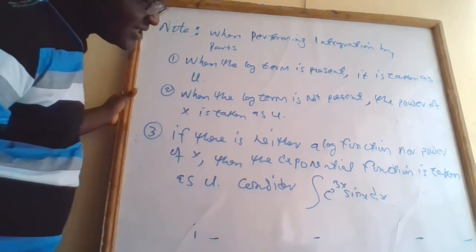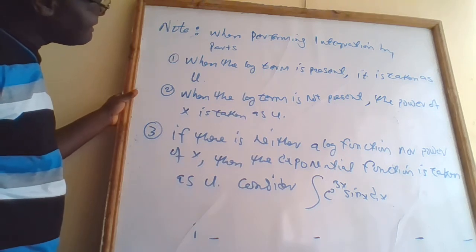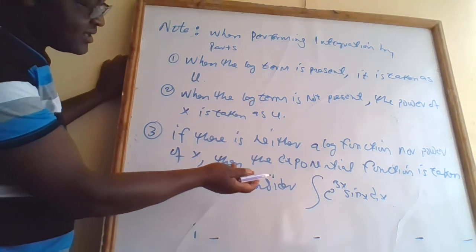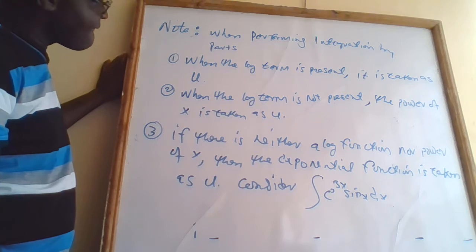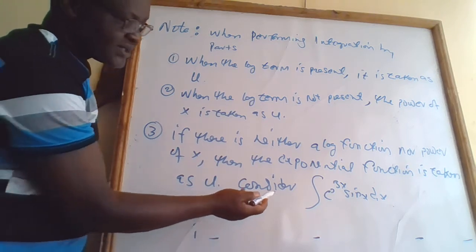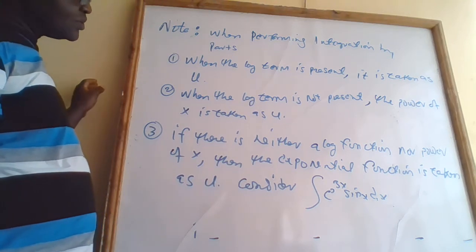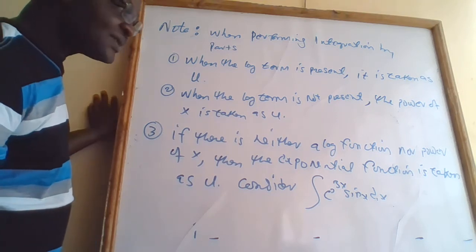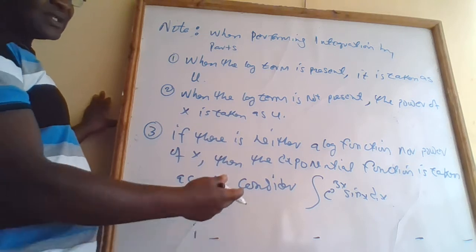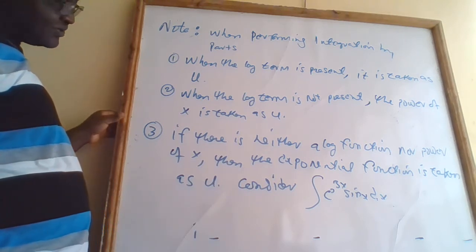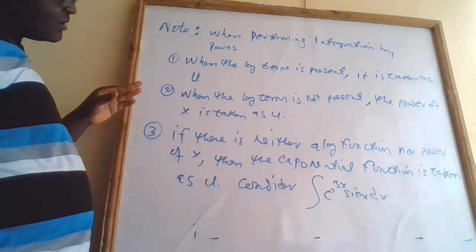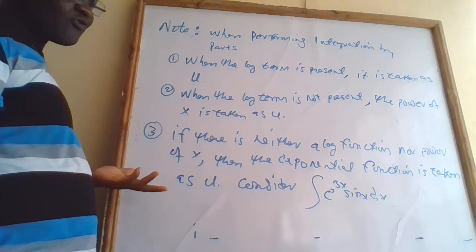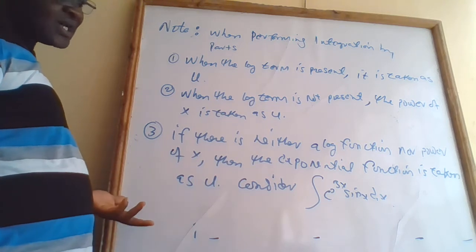Now I want to do the assignment for this given example. I ask myself: do we have the log term present? The log term is not present. Number two: if the log term is not present, then the power of x is taken as u. Do we have the power of x? We don't have the power of x in the given expression. So I move to number three, which says that if the log term is not present and there is also no power of x, then the exponential function is taken as u.